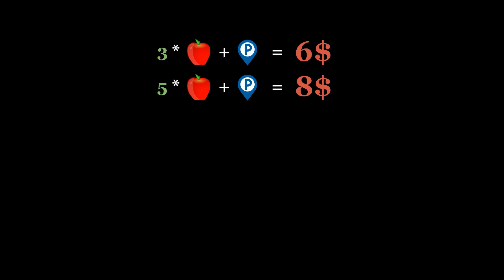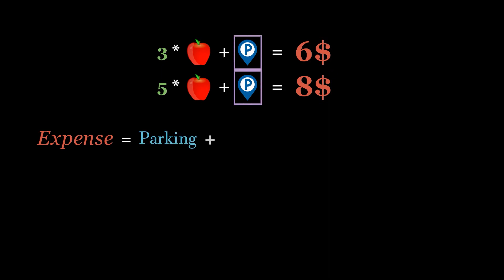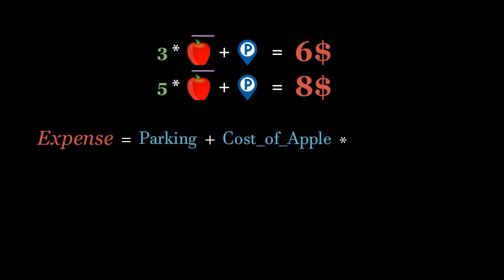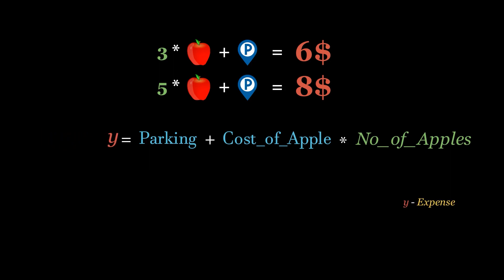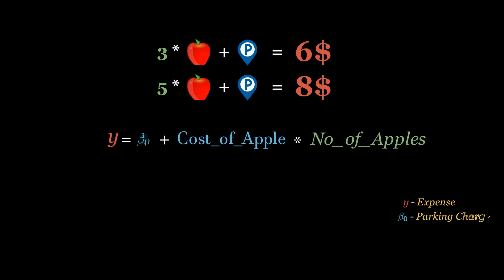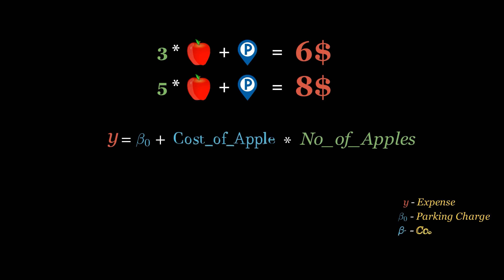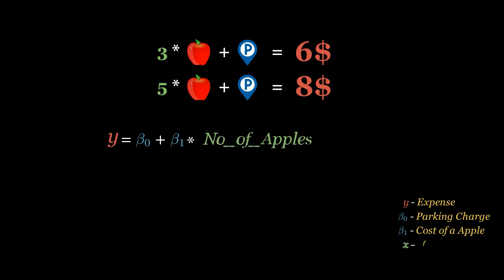To solve this question, let's convert these equations to a simpler form. We can simply say expense is equal to parking charges plus cost of apple multiplied with number of apples. Or in general formal notation: y equals beta zero plus beta one multiplied with x.